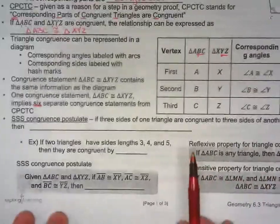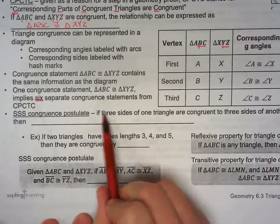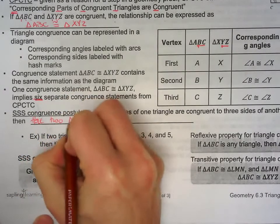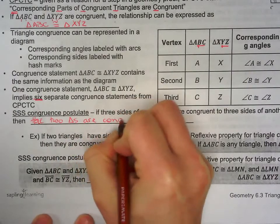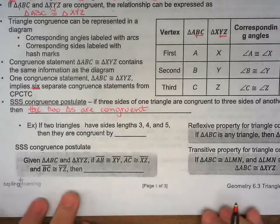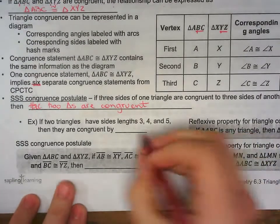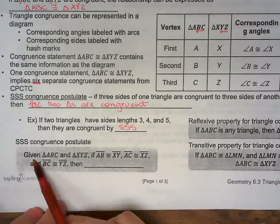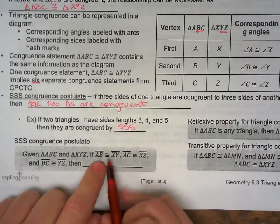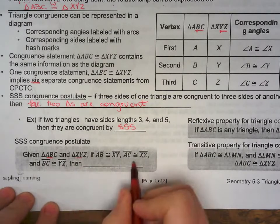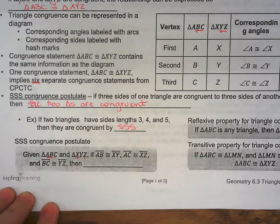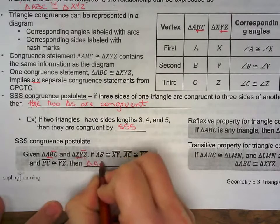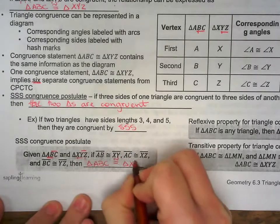Triangle ABC congruent to triangle XYZ implies six separate congruence statements from CPCTC. The side-side-side postulate: if three sides of one triangle are congruent to three sides of another triangle, then the two triangles are congruent. For example, if two triangles have side lengths 3, 4, and 5, then they're congruent by SSS. So if side AB ≅ XY, side AC ≅ XZ, and side BC ≅ YZ, then triangle ABC ≅ triangle XYZ.